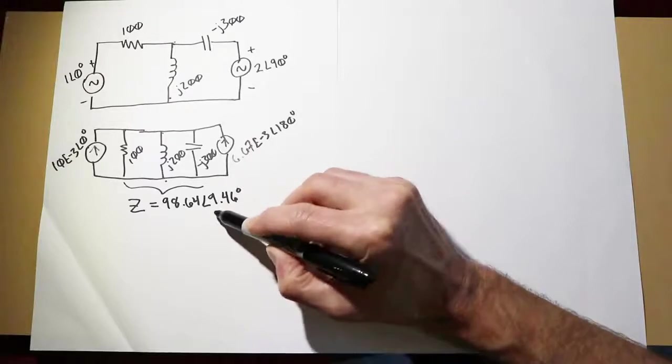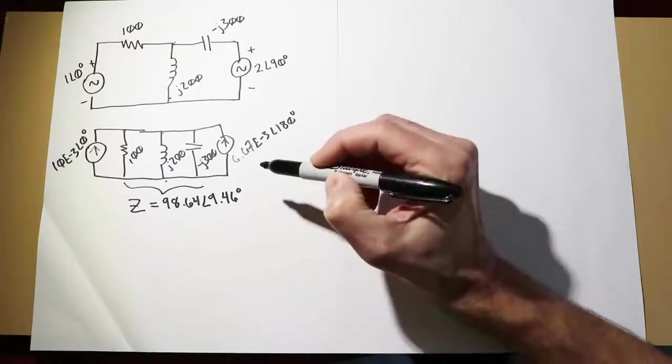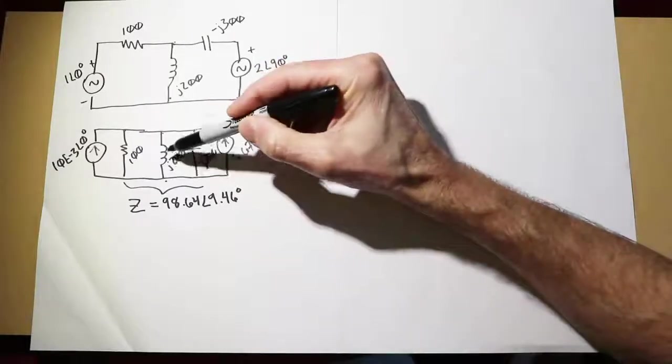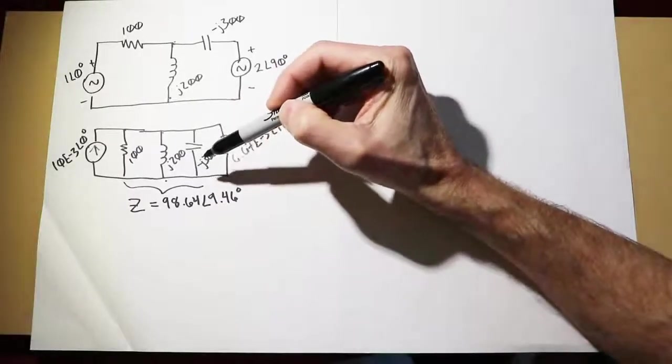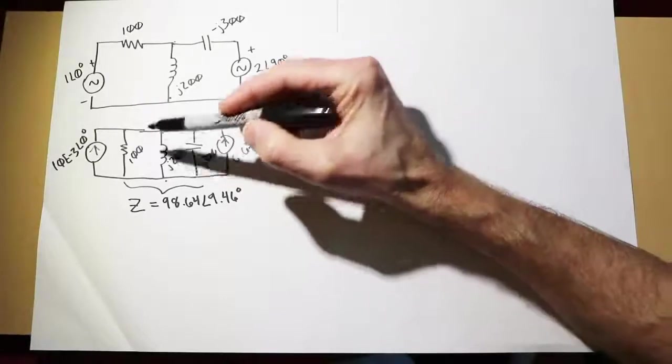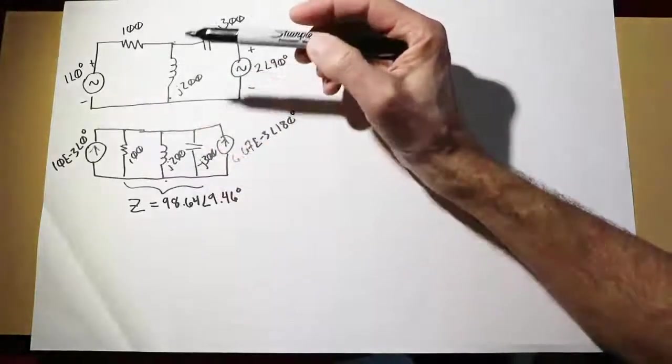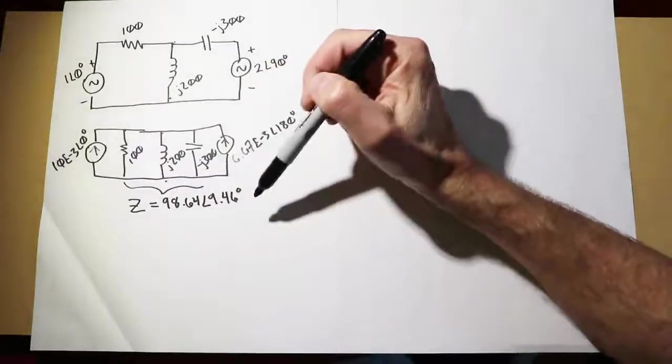Notice this is a slightly positive angle. That makes sense. The inductor is a smaller value in parallel with the capacitor, so we expect the combined impedance to be slightly inductive. The resistor is the smallest of the three, so we don't expect a very large angle.